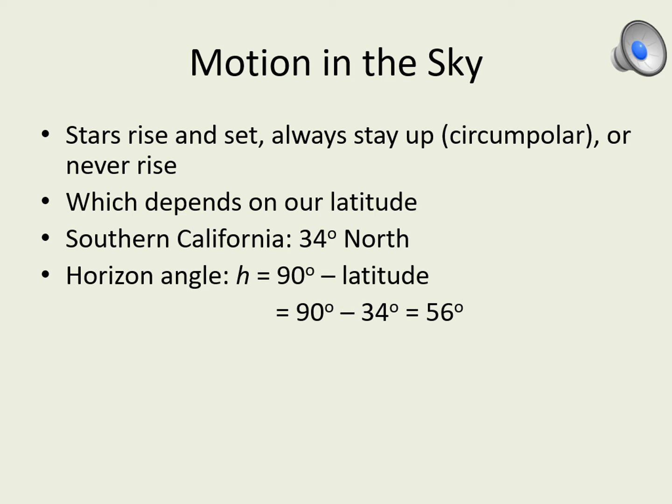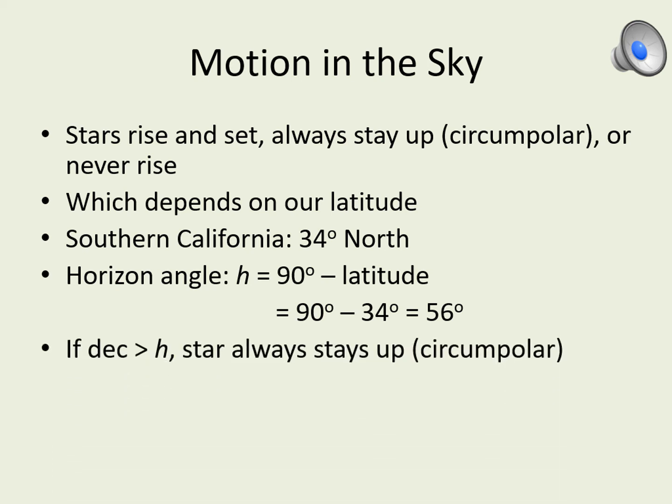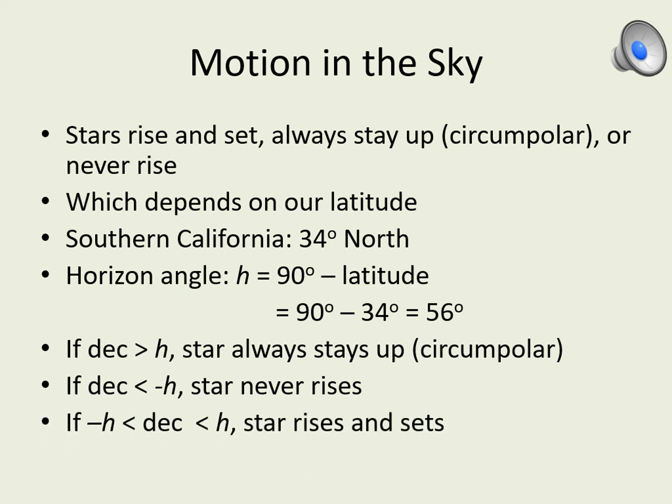We can compare the declinations of the stars to the horizon angle. If a star has a declination larger than the horizon angle, then it's circumpolar — it stays in our sky all the time, circling around the North Celestial Pole. If the declination is less than minus the horizon angle, the star never rises above the horizon. Since minus the horizon angle is minus 56 degrees here, any star with a declination between minus 56 and minus 90 degrees stays out of sight. Finally, if a star has a declination between plus 56 and minus 56 degrees, we will see it rise and set.